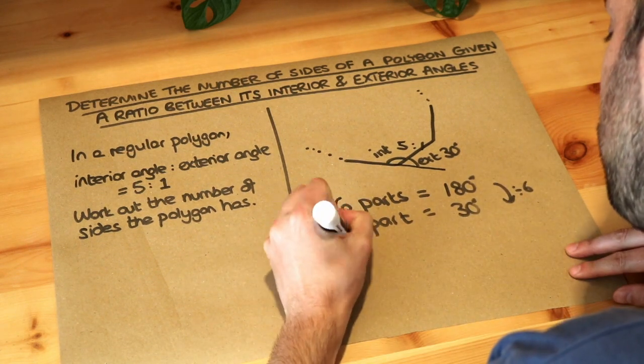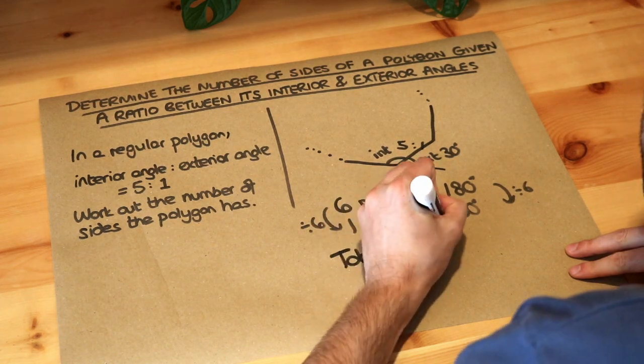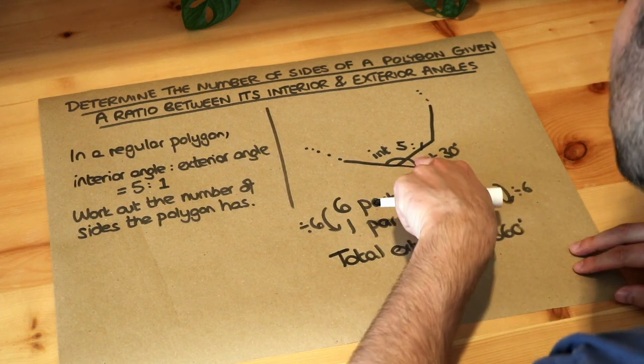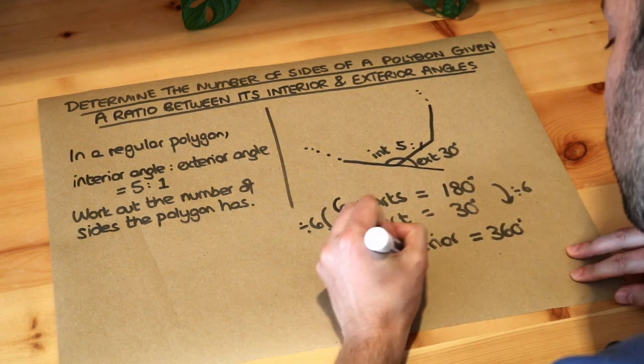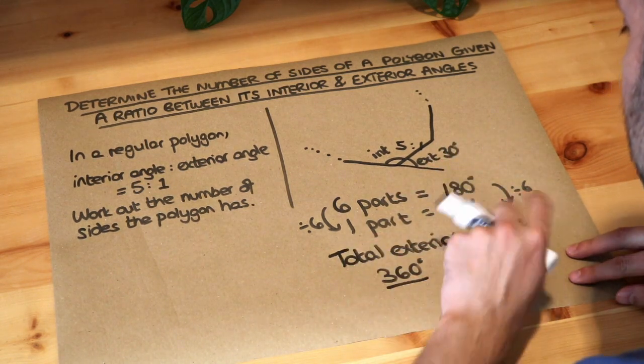Now remember that the total exterior angle of any polygon is 360 degrees. That means if each exterior angle is 30 degrees, we just need to see how many times 30 degrees goes into 360, because each side gives you one exterior angle.